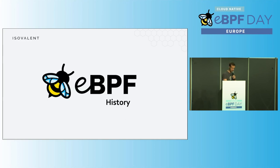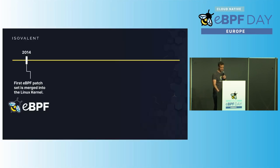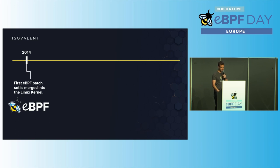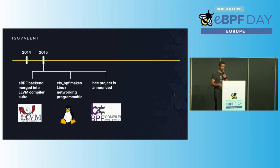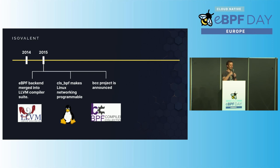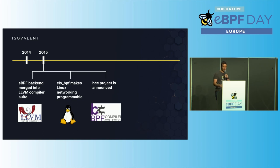A bit of eBPF history before we go into the future. eBPF started in 2014 — the same year as Kubernetes — when the first kernel patch was merged. A year later, the LLVM compiler received its eBPF backend. Back then, eBPF was really low level, meant only for kernel engineers. Having an LLVM backend meant we could write pseudo-C code — a high-level language for kernel developers. Also, CLS-BPF was merged, enabling BPF programs for network packets that Cilium and others use today.